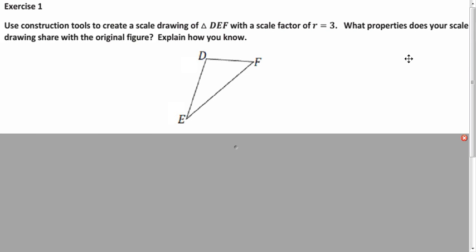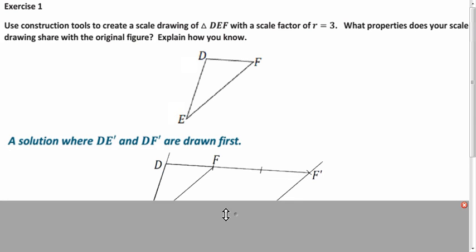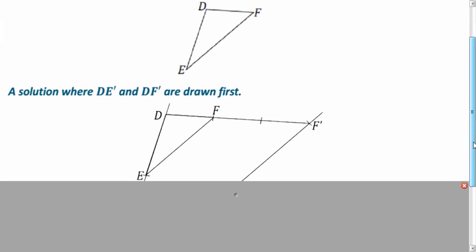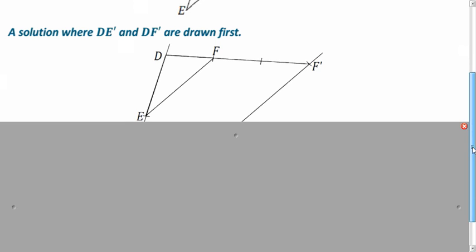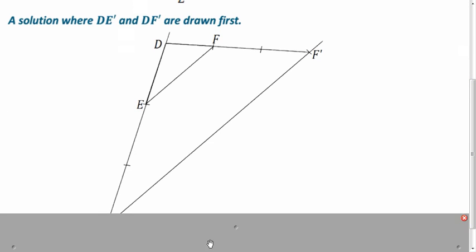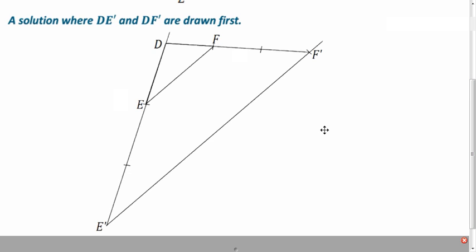So now we want to do a scale factor of three. So it's the same idea. Here's an example where you use D and you're extending, going from D through F to find out where F prime is. And doing the same with E to find E prime. And so you'd use your compass to mark off twice this time. So you'd have from D to F. Mark that with your compass and then put your pivot on F. Mark it again and then put your pivot on this point to find out where F prime is. Same idea here. So these three segments will be congruent.